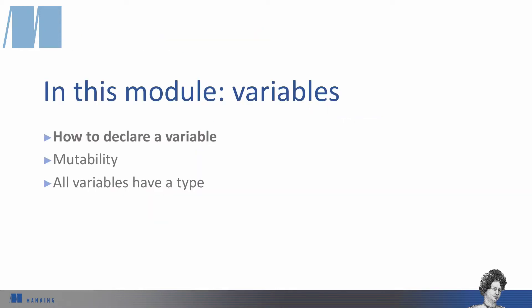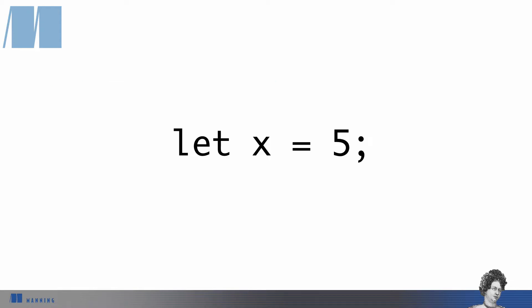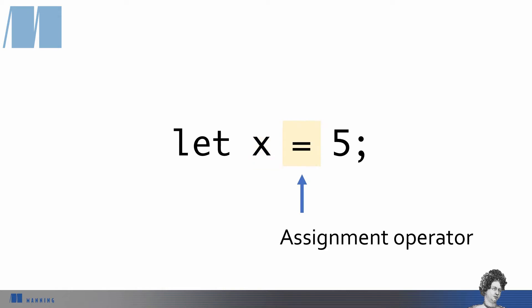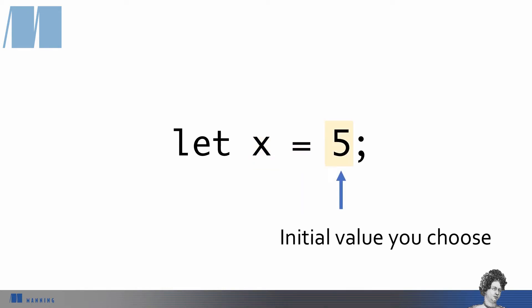Let's talk about how to declare a variable in Rust. All variable declarations start with the let keyword, followed by the name we want. Here we're declaring a variable named x. To give variables an initial value, we use an equal sign and then specify the value we want to assign to the variable. Here the value we're choosing is the number 5.